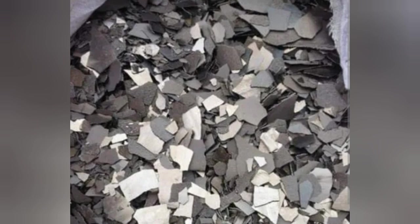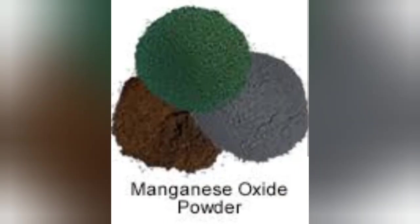Almost all commercial alloys of aluminum and magnesium contain manganese to improve corrosion resistance and mechanical properties. The principal industrial compounds of manganese include several oxides. Manganese oxide, or manganese monoxide, is used as a starting material for the production of manganese salts, as an additive in fertilizer, and as a reagent in textile printing. It occurs in nature as the green mineral manganosit.